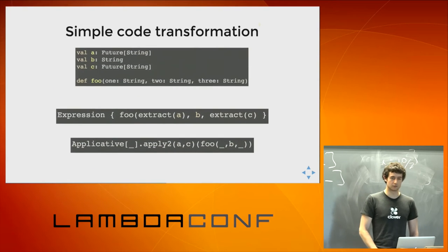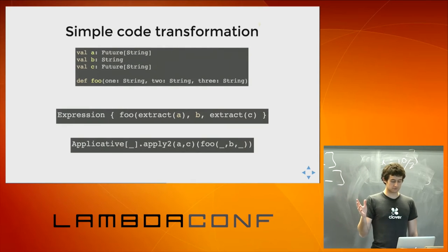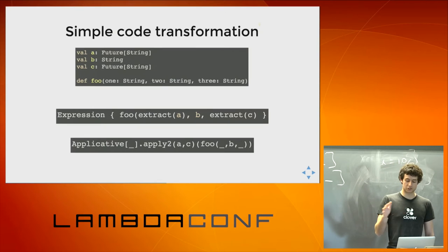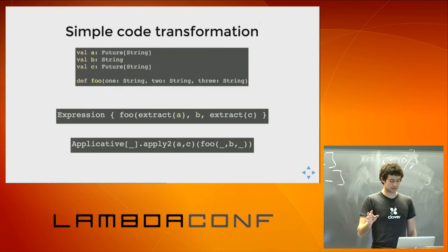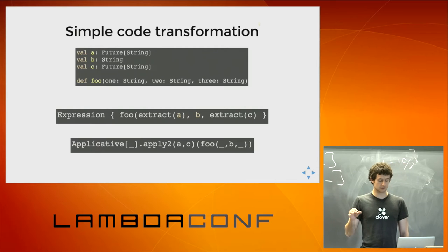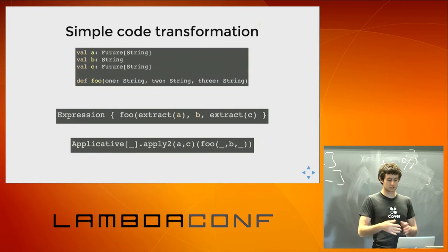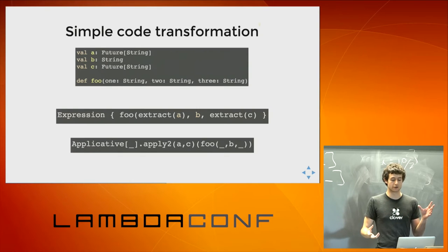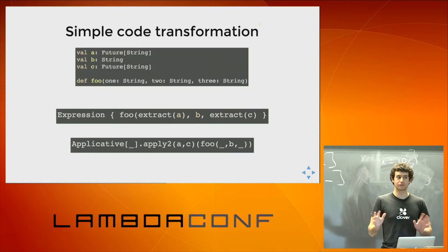What's really cool with this notation is that it's implemented in a pretty straightforward way. Here we have a basic code expression calling foo, and we're extracting A and C because they are futures, and we have this foo function defined over two strings. What that actually just translates to is a call to applicative.ap2(a, c), and then we stick in foo with underscore, underscore. In this short case, writing it out manually actually seems simpler than using an expression. You start getting gains when the expressions are longer. But what's really interesting is there's no magic going on — it's just rewriting things into stuff you could write manually.